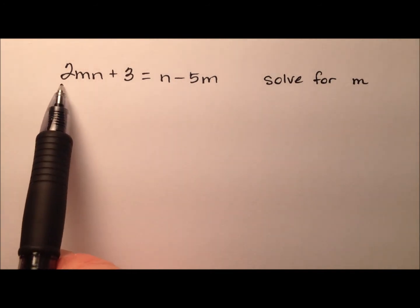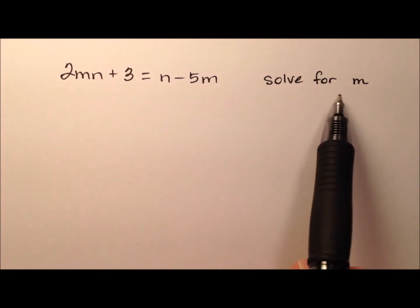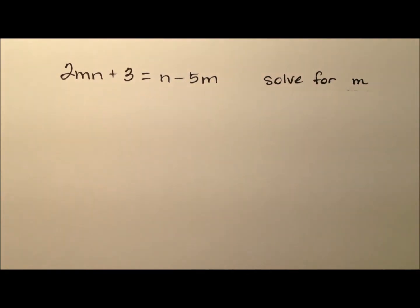In this example, we have this literal equation here. We got a couple of variables, m and n, and we would like specifically to solve for m.